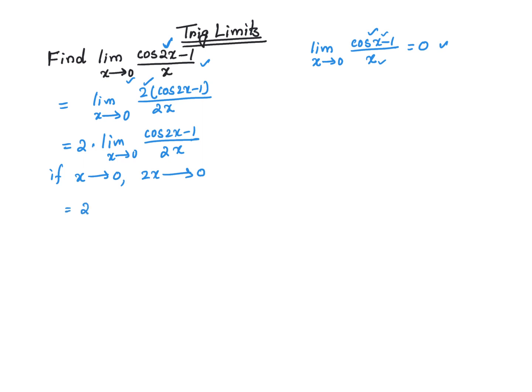So that's going to give me 2 times limit as 2x approaches 0 of cosine of 2x minus 1 divided by 2x, which is going to be nothing but 0. So that's going to be 2 times 0 is equal to 0.